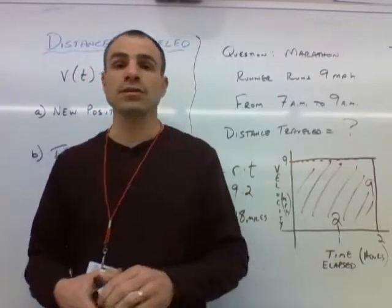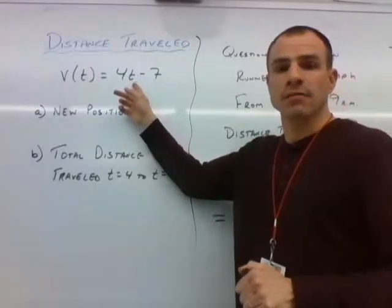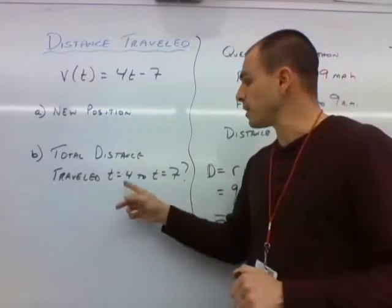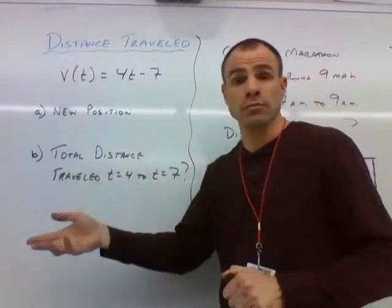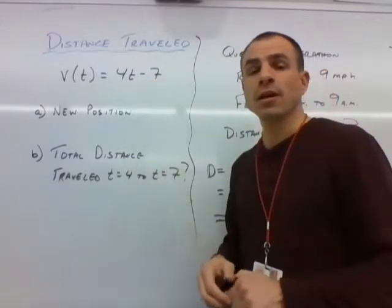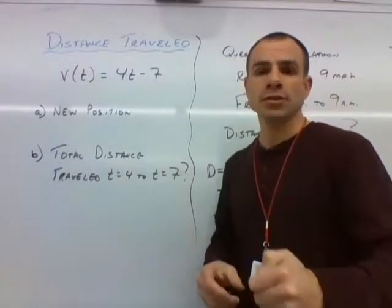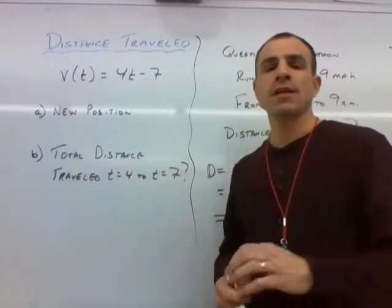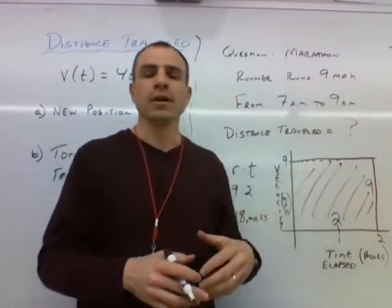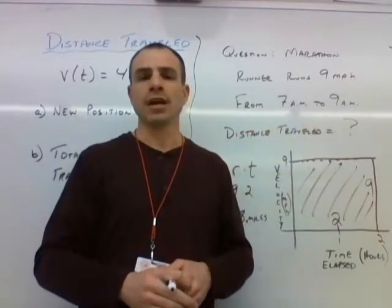So if we were to graph 4t minus 7 from t equals 4 to t equals 7, and we will do that soon, if we were to find this graph and we were to look at the area under 4t minus 7, we should come up with an answer of 45, just like we did in example 1, part D. And this idea of finding the area under the graph is leading us to these huge discoveries and really setting up the second half of the course.